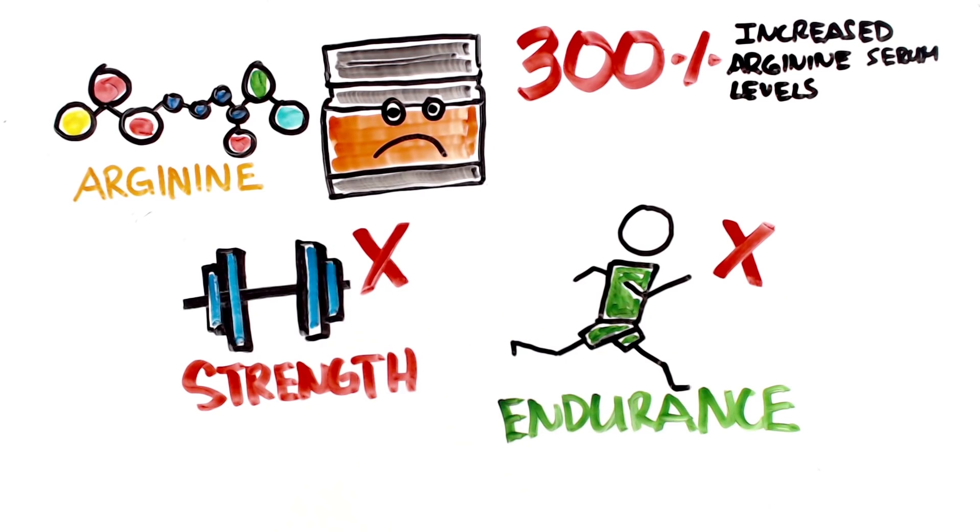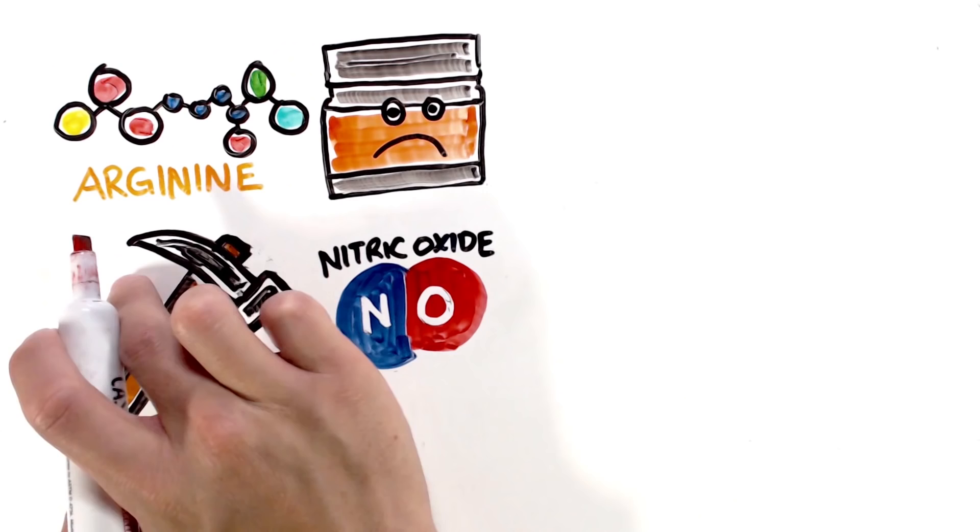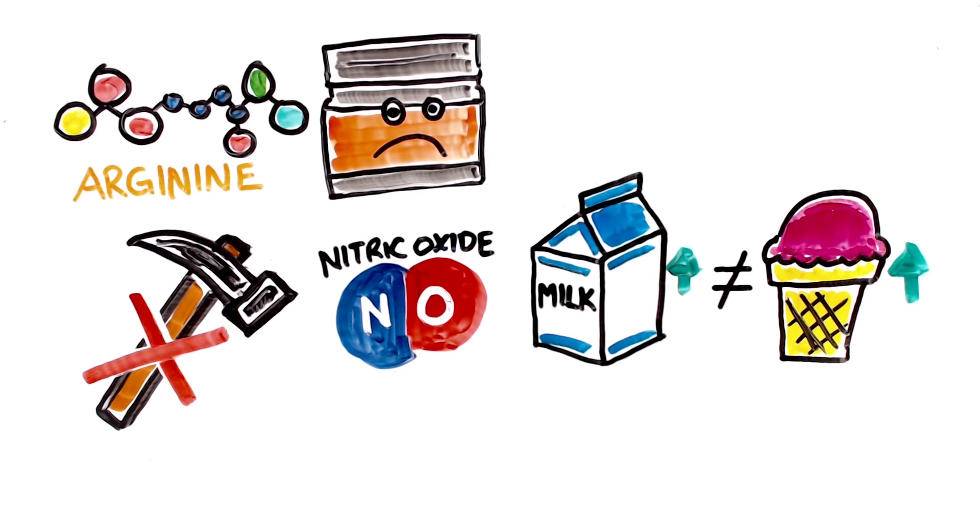Arginine is also not really good at actually activating nitric oxide production; rather it's just a substrate of nitric oxide production. Kind of like having more milk doesn't mean you have more ice cream, you just have more materials to make ice cream.